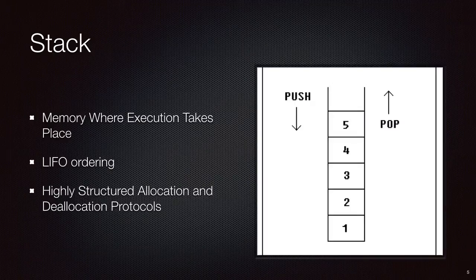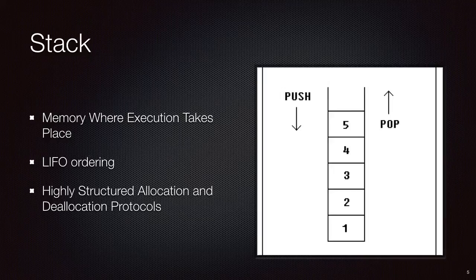That means we have to step back and talk about things like the stack. This differs from the heap — whereas the heap is a dynamic space, the stack is not. The stack is the memory where execution will take place, with last-in-first-out ordering of data, as well as operations in a highly structured allocation and deallocation process. Basically, your program and data exist in it, pushed onto the stack and then popped off in a very prescribed manner. Bitcoin Script will use two of these: the main and alt stacks.